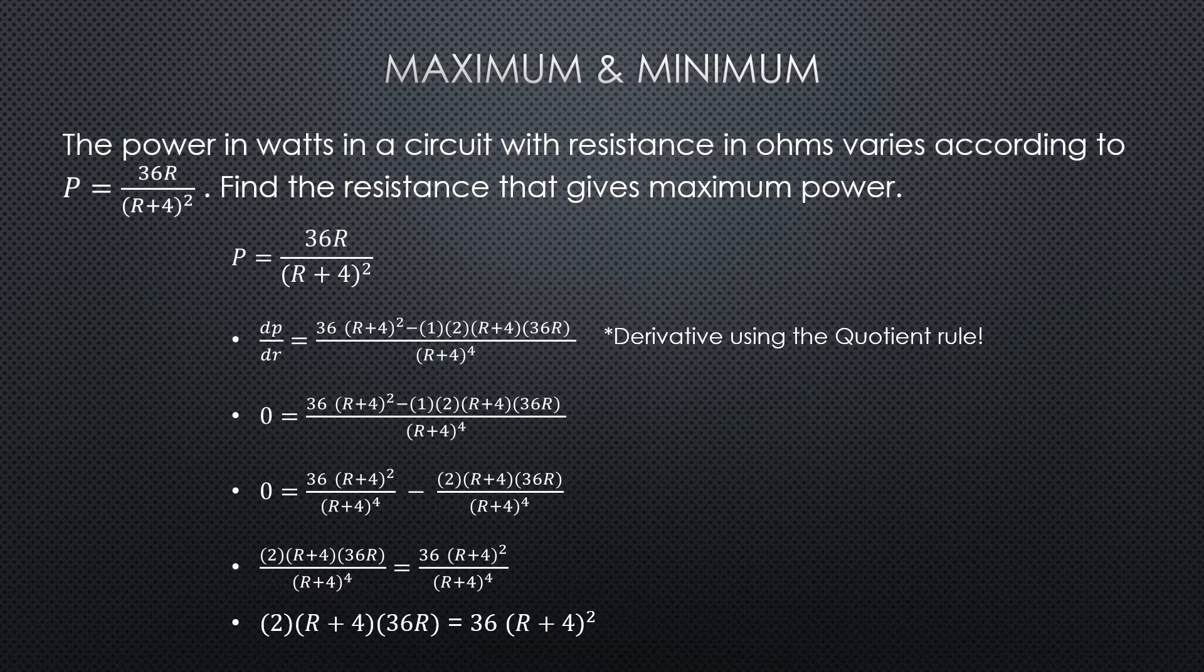But the basic gist is you're going to take the derivative of the numerator times the denominator, and then you're going to subtract the derivative of the denominator times the numerator, and then all of that is going to be divided by the denominator squared. And so you can see I've done that right there at that first bullet point.